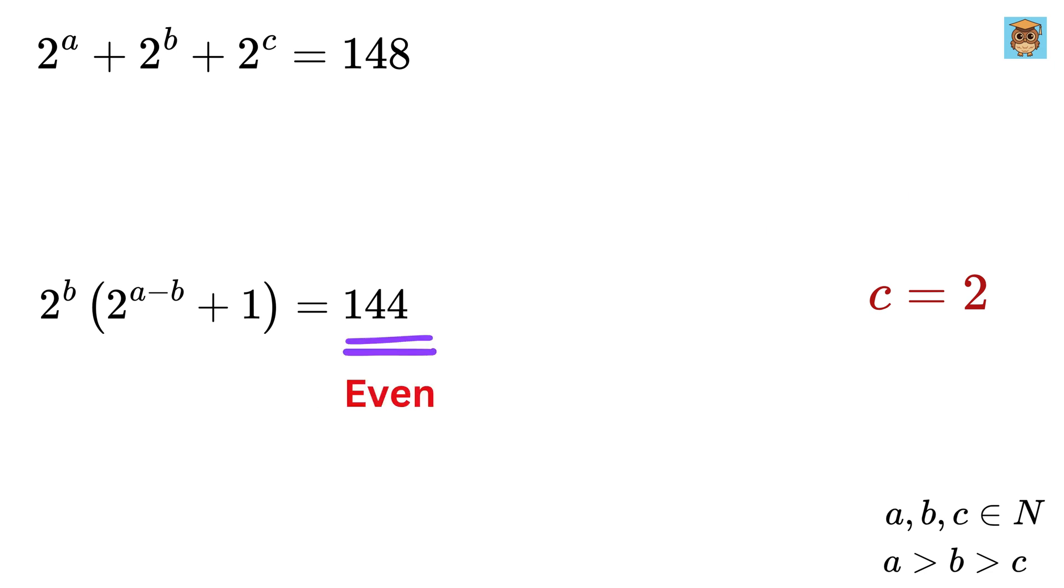Again, the right-hand side is an even number, and this is also even whereas this thing is an odd number. So, what do we do? Make 144 as a product of an even number times an odd number. I will save you some steps, and we can write 144 as 16 times 9.